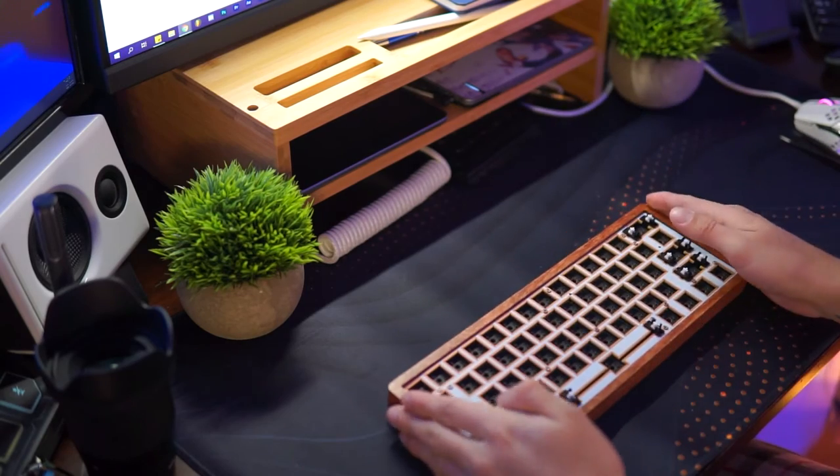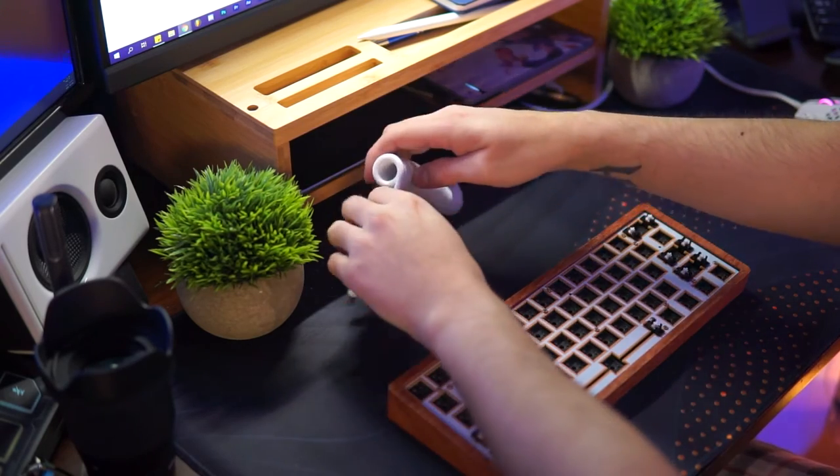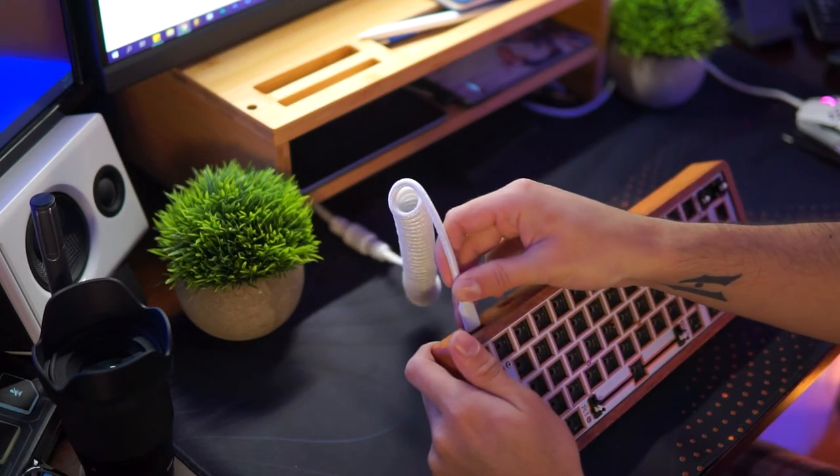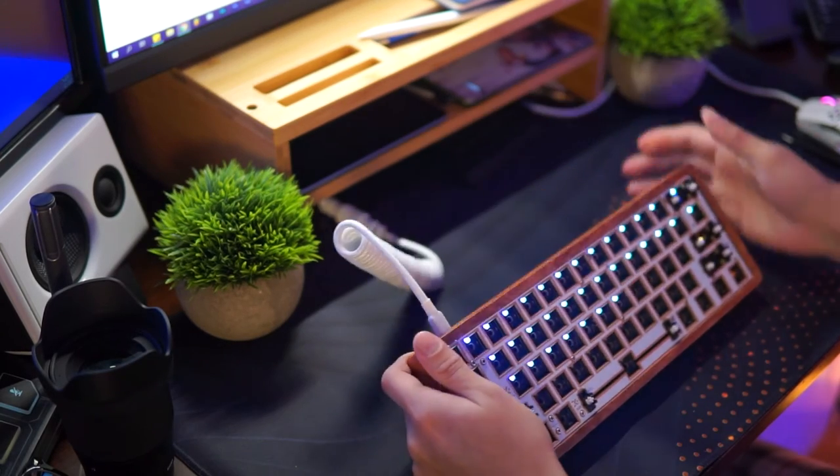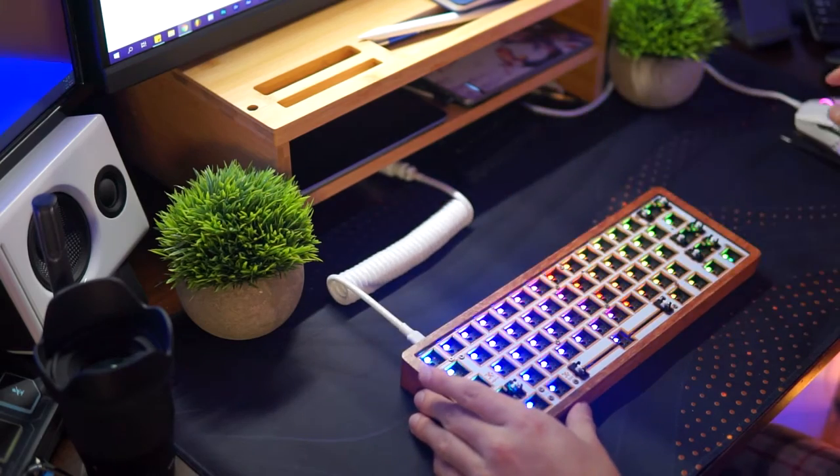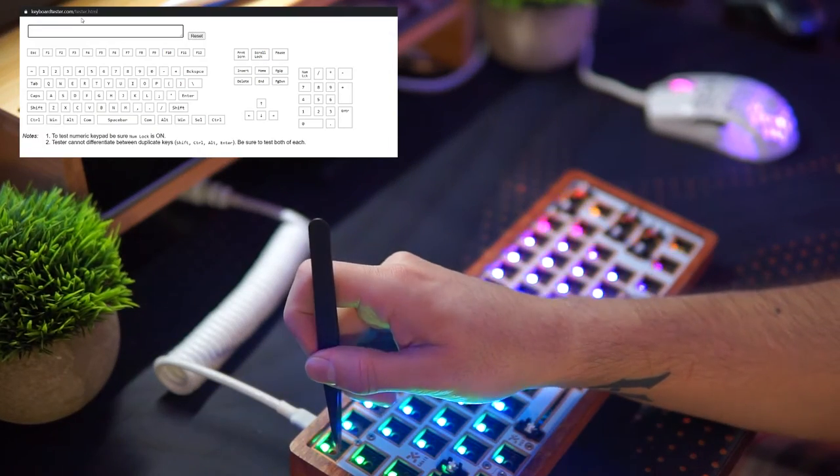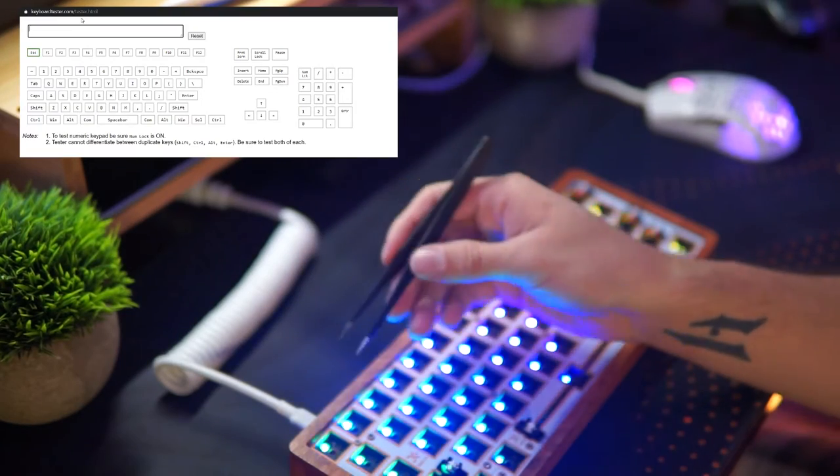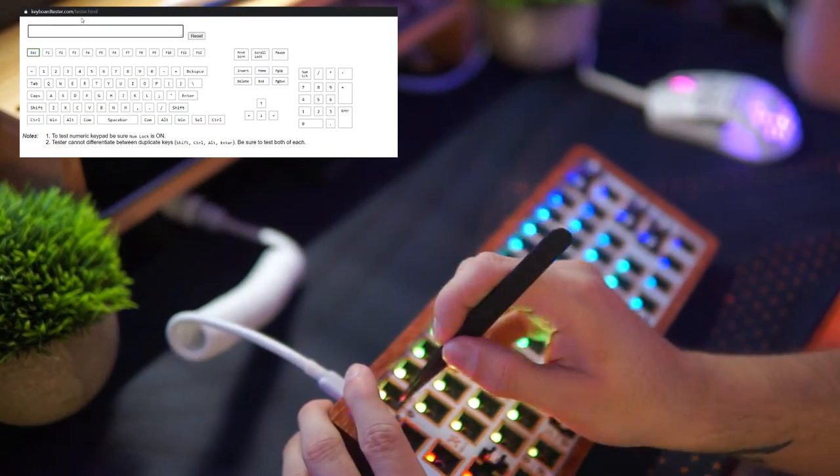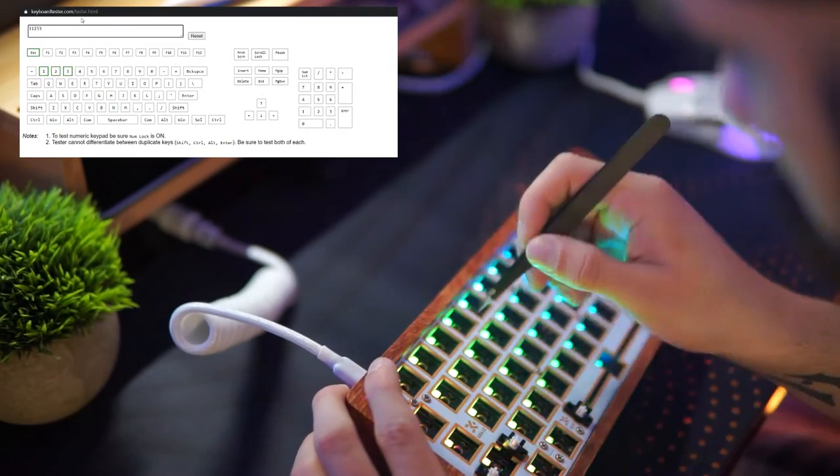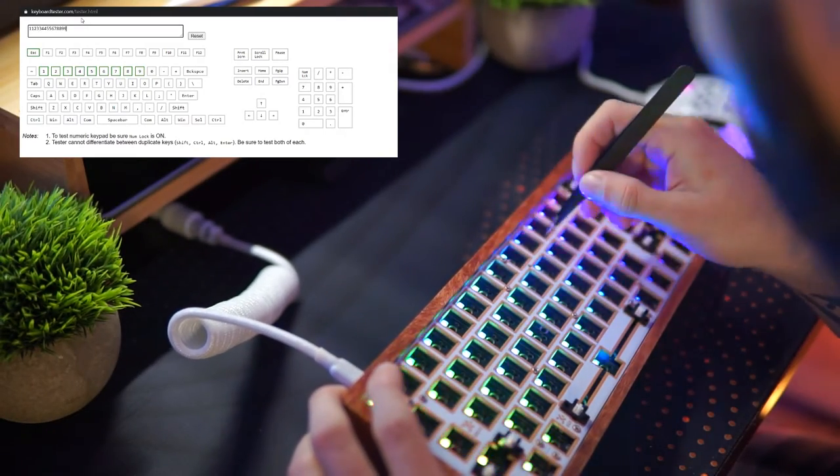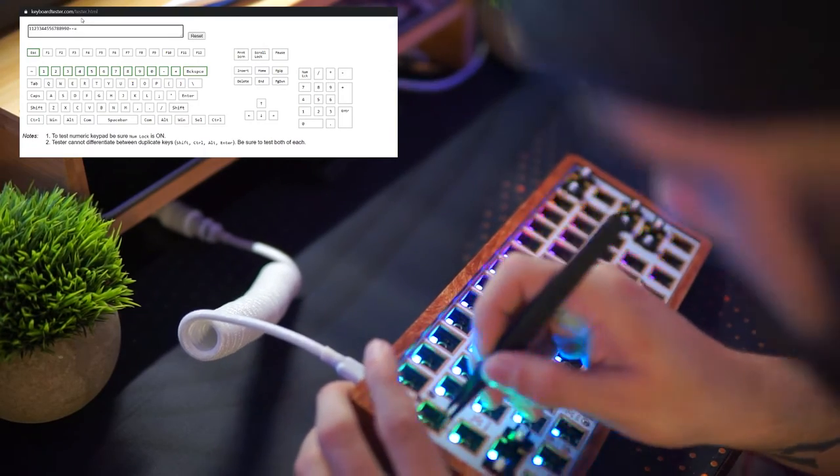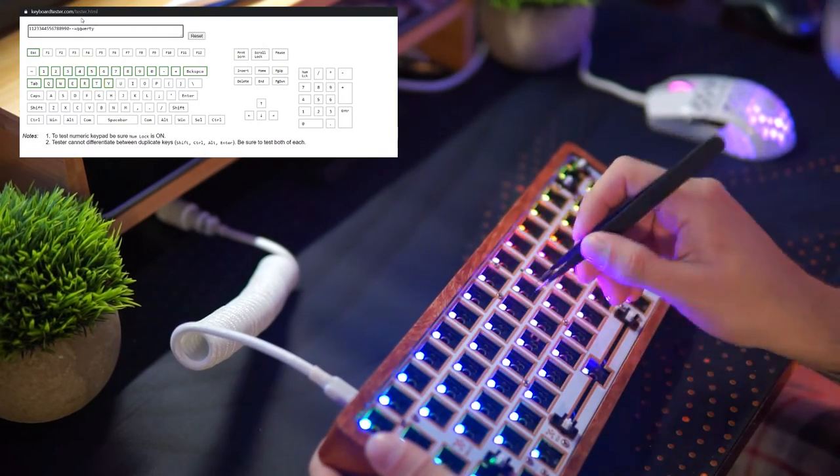Next step was to connect the PCB to my computer to ensure everything was functioning correctly. Now, I've seen this method used in other videos when it came to ensuring that the PCB works. Essentially, you use a pair of metal tweezers and touch both ends to the contacts on the PCB, which mimics the keyswitch actuation. This turned out to require much more finesse than I thought, repeating this for all 61 sockets.